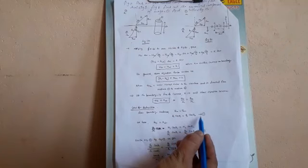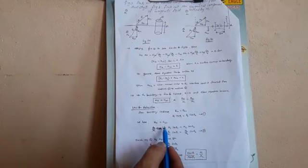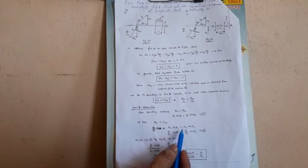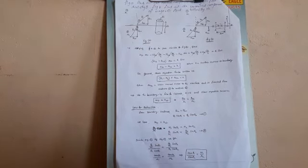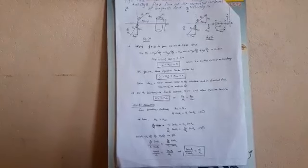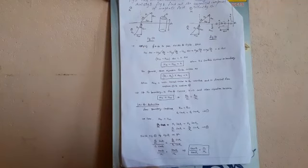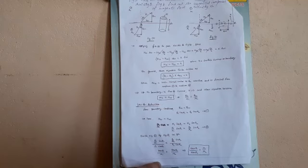Law of refraction. From boundary conditions, B1n is equal to B2n, so B1 cos theta1 is equal to B2 cos theta2 — that is equation 1 from Figure A. H1t is equal to H2t, so H1 sin theta1 is equal to H2 sin theta2, that is from Figure B. That can be written as B1 by mu1 sin theta1 is equal to B2 by mu2 sin theta2. Dividing gives tan theta1 by mu1 is equal to tan theta2 by mu2.